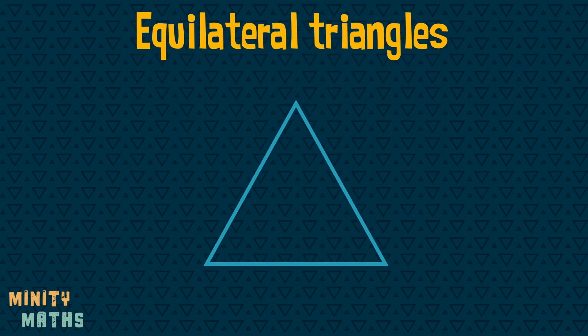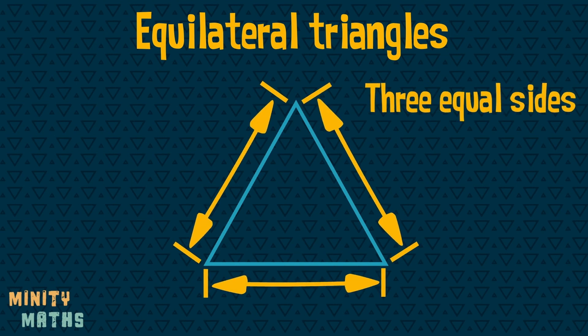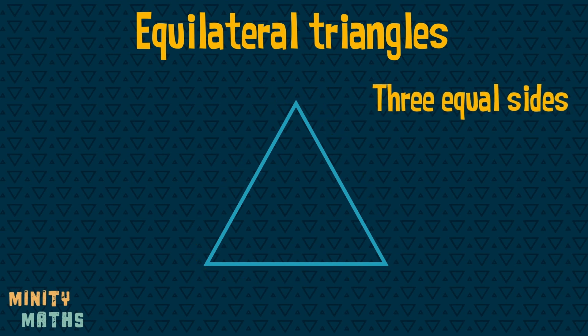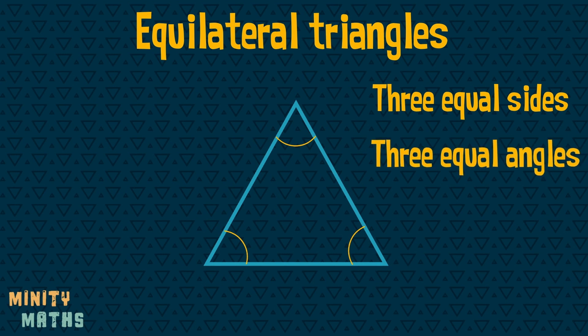Equilateral triangles have three equal sides, three equal angles, and three lines of symmetry.